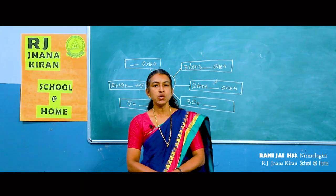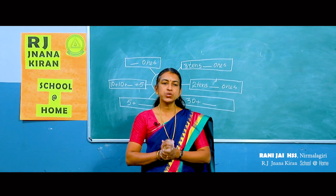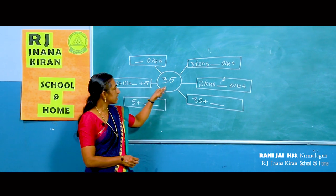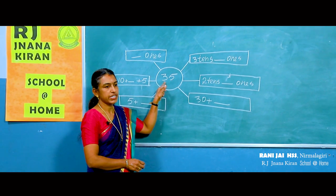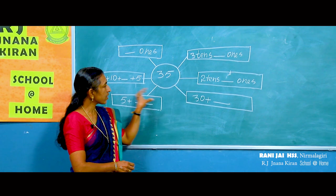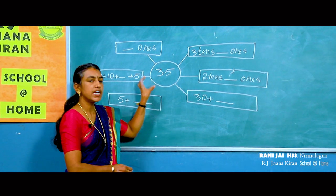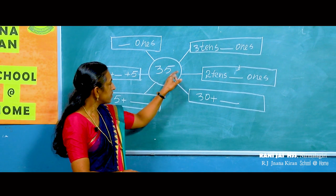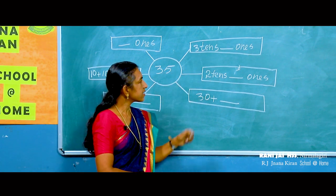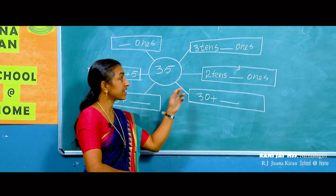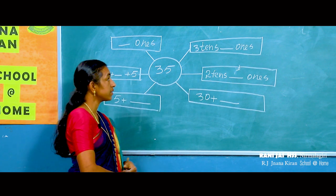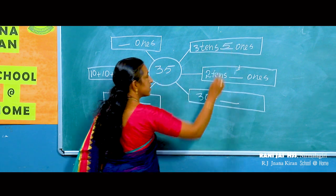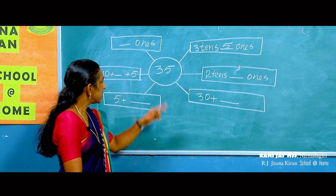Now we have to express a two-digit number in different ways. Students, read this number: 35. Here we have to express this number in different ways. Look at the first one: 35 is equal to three tens and how many ones? That is three tens and five ones. Good — three tens and five ones.